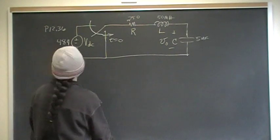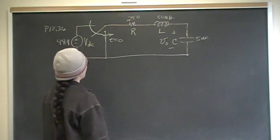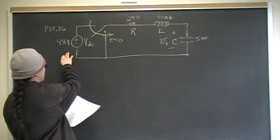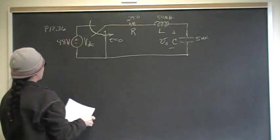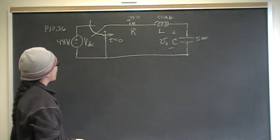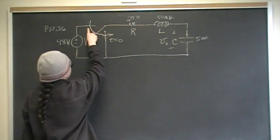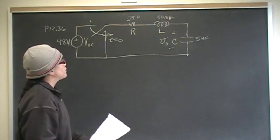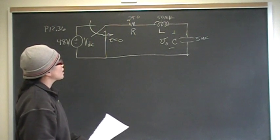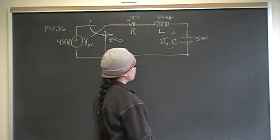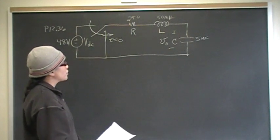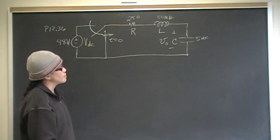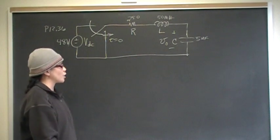Hello. This problem is problem 36 from chapter 12, section 7 on inverse Laplace transform. Here we have a 48 volt independent voltage source, and before time zero it's connected in series with a 250 ohm resistor, a 50 millihenry inductor, and a 5 microfarad capacitor. What we're looking for is the time-domain voltage equation for the voltage drop across the capacitor.